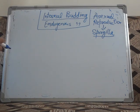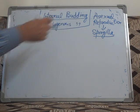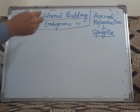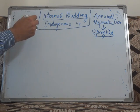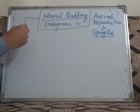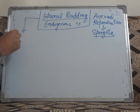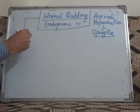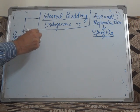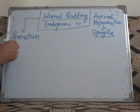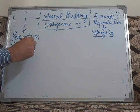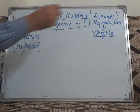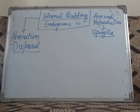Let's see how this internal budding takes place in Spongilla. This method is a method of perennation to pass the unfavorable conditions, and it also helps in the dispersal of the freshwater sponges.